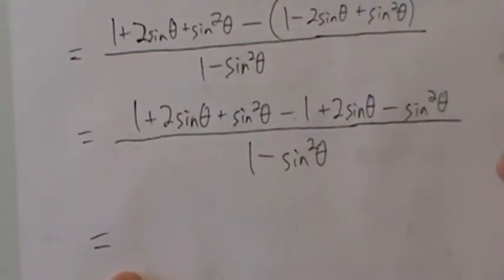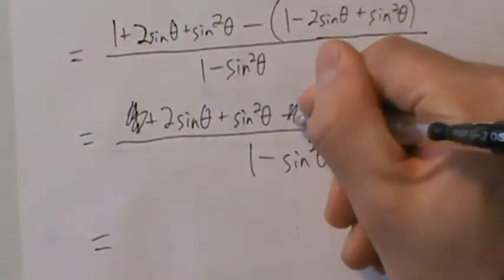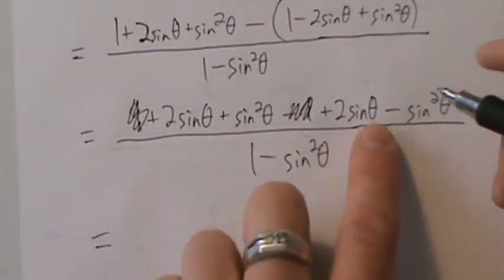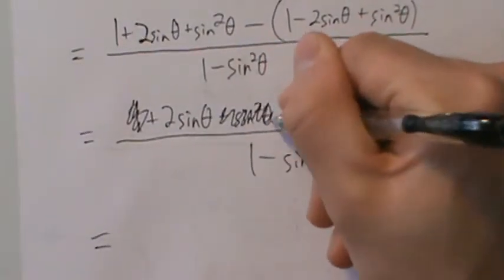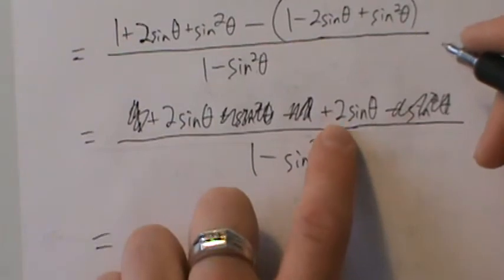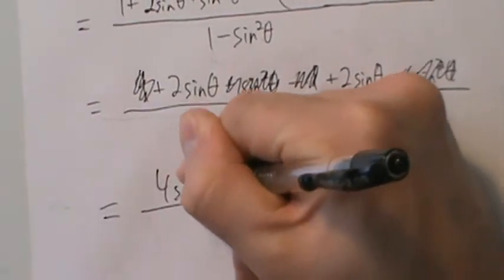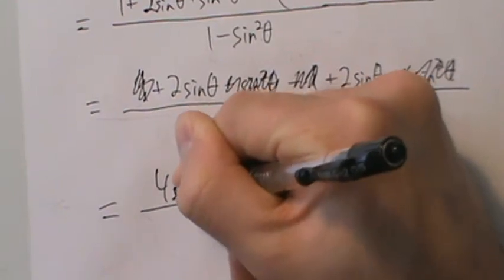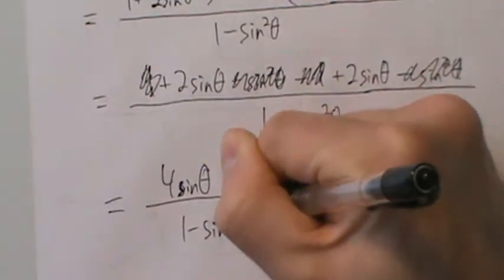Now let's see what cancels: 1 and -1 cancel, +sin²θ and -sin²θ cancel. What remains is 2sinθ + 2sinθ = 4sinθ on top. So we have 4sinθ over (1 - sin²θ) on the bottom.